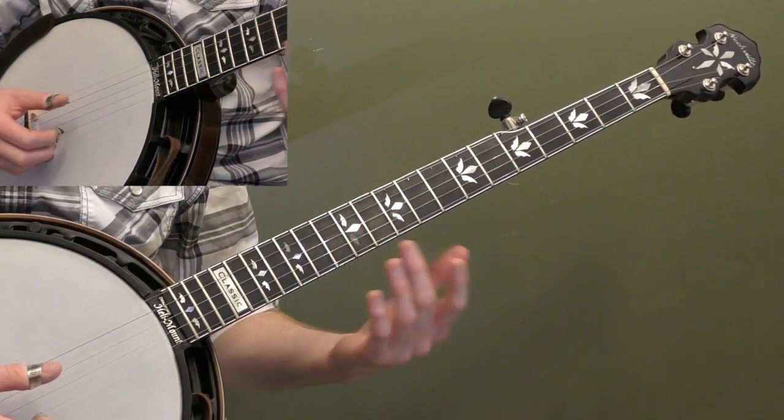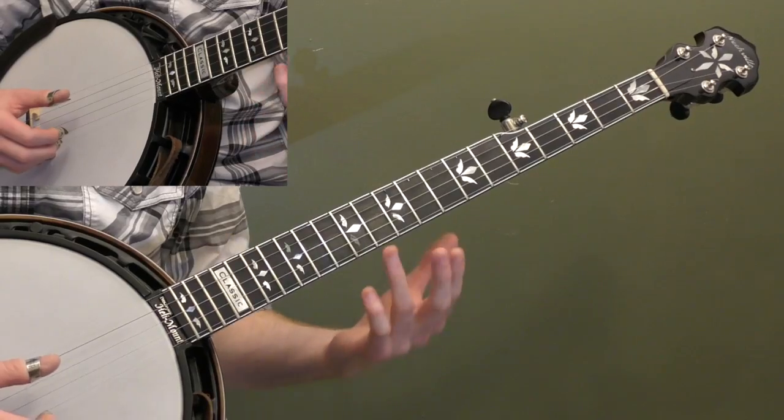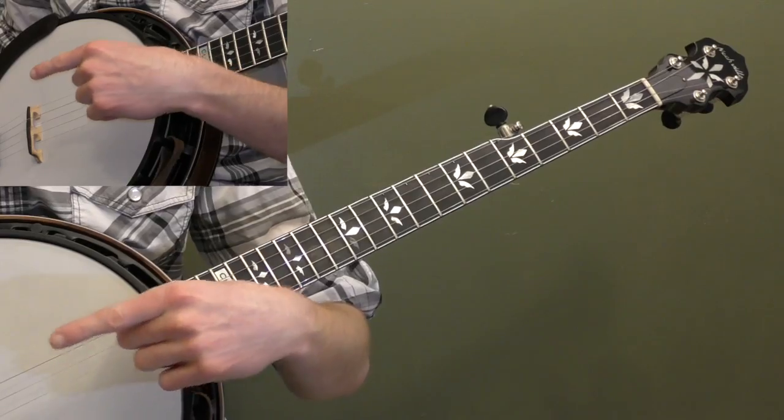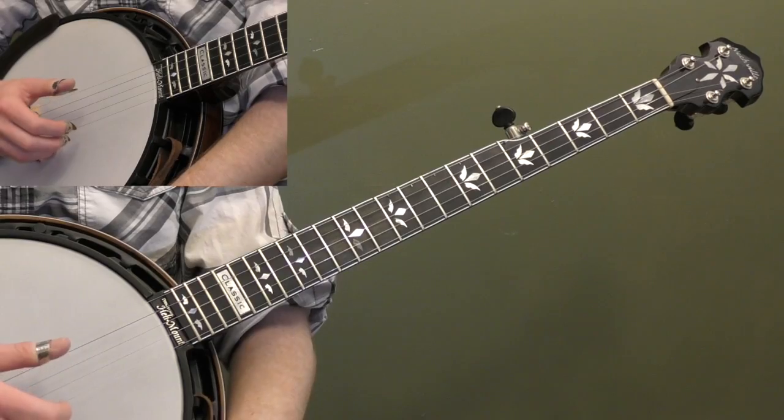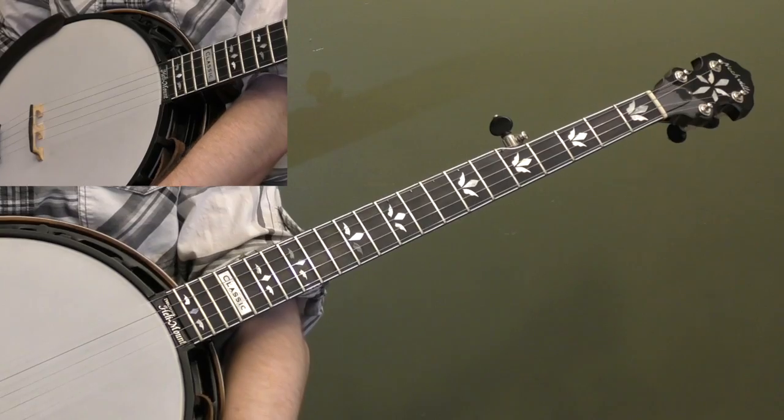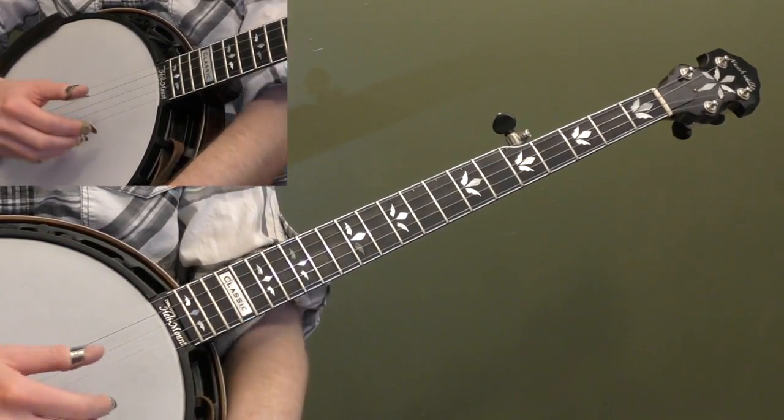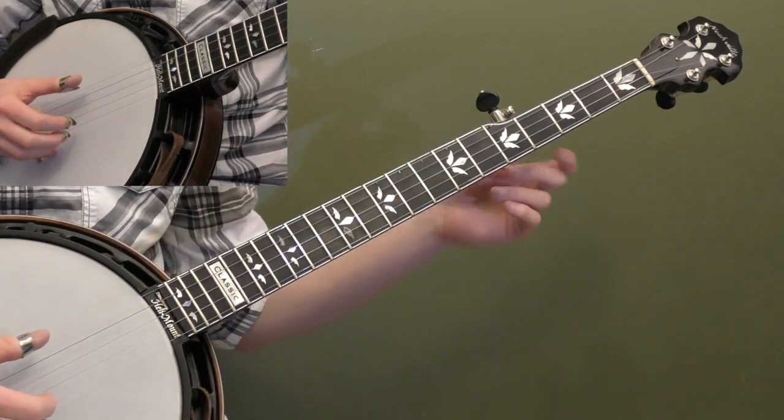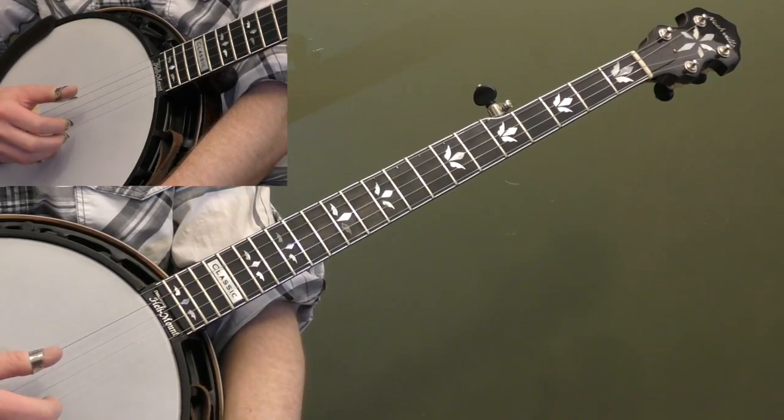But basically, you can even use a tuner to do it. But if your notes are sharp, if the fretted notes are sharper than the harmonic notes, so higher, you need to move your bridge back toward the tailpiece. And just do it very slightly. A small adjustment will make a difference. And vice versa, if the notes are flat, your bridge is too close to the tailpiece, and you want to move it a little bit forward. And that just takes practice. You can loosen the strings a little bit if you need to move the bridge. So, give that a try if you need to if your intonation isn't quite on. Or you can have someone set up your banjo that knows what they're doing.